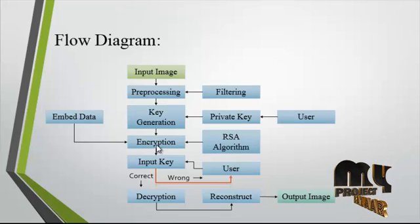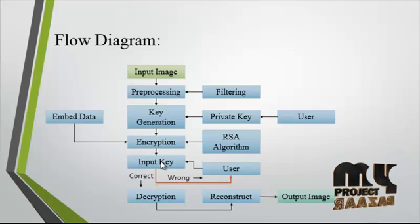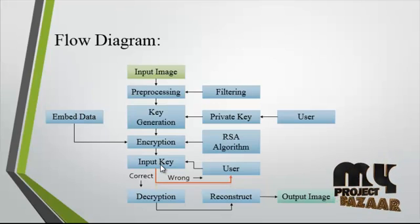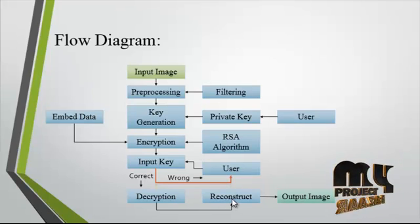During encryption, the data — meaning the text form of the data — is embedded into the image using the RSA algorithm. After embedding the data into an image, the data-encrypted image is undertaken for decryption. In the decryption step, the user enters the correct appropriate key. If the key is correct, decryption is undertaken and the image and the data are reconstructed.